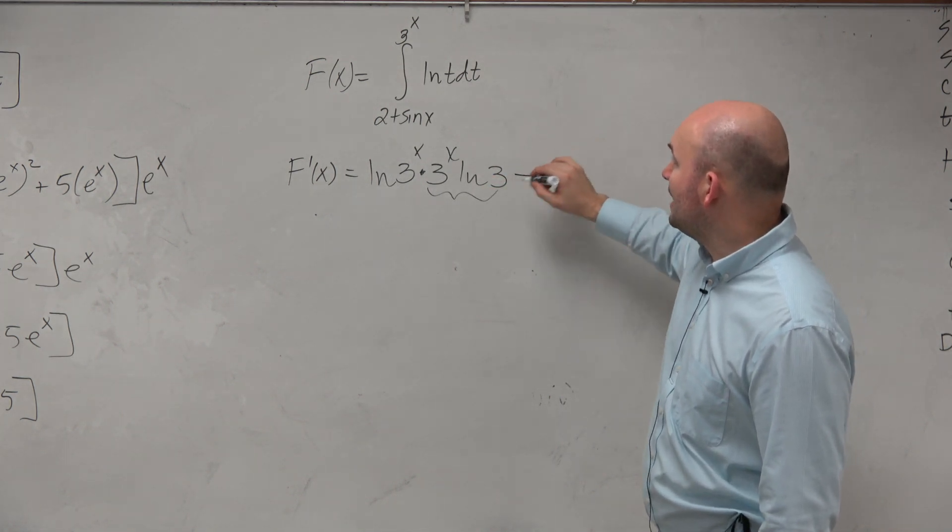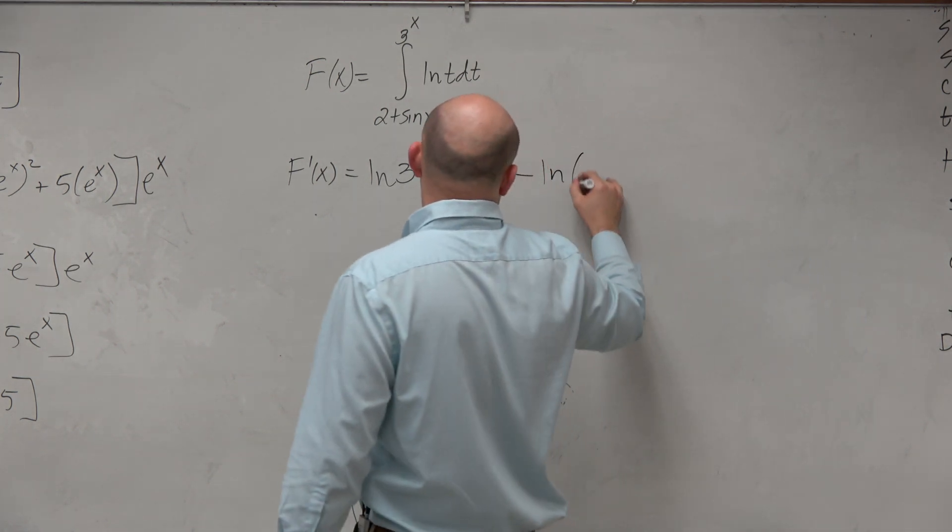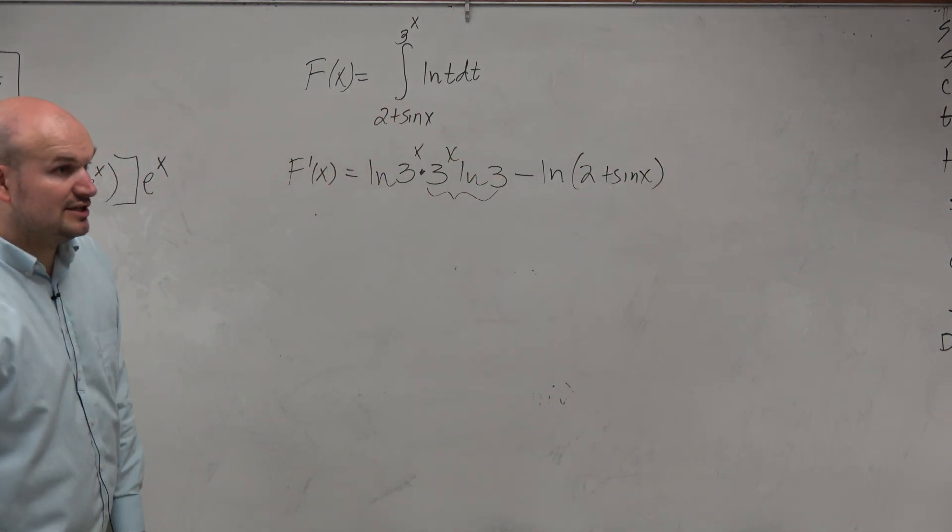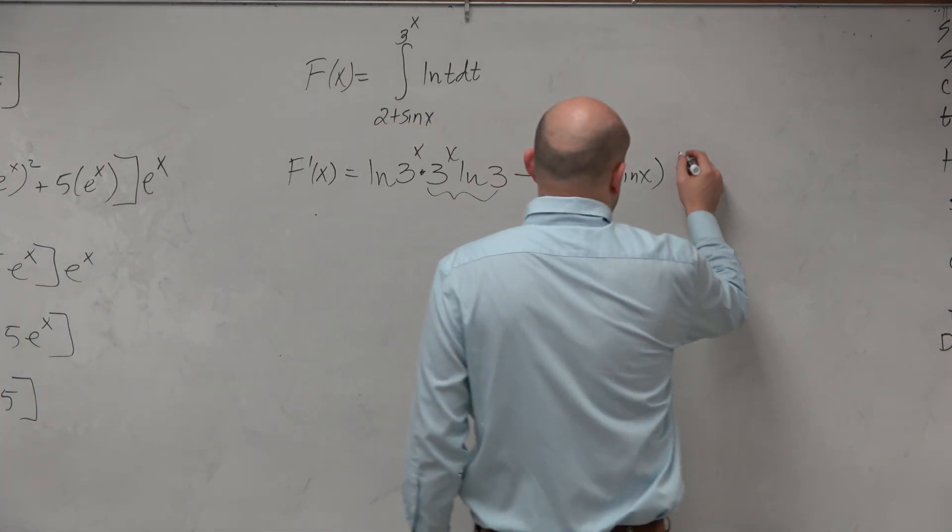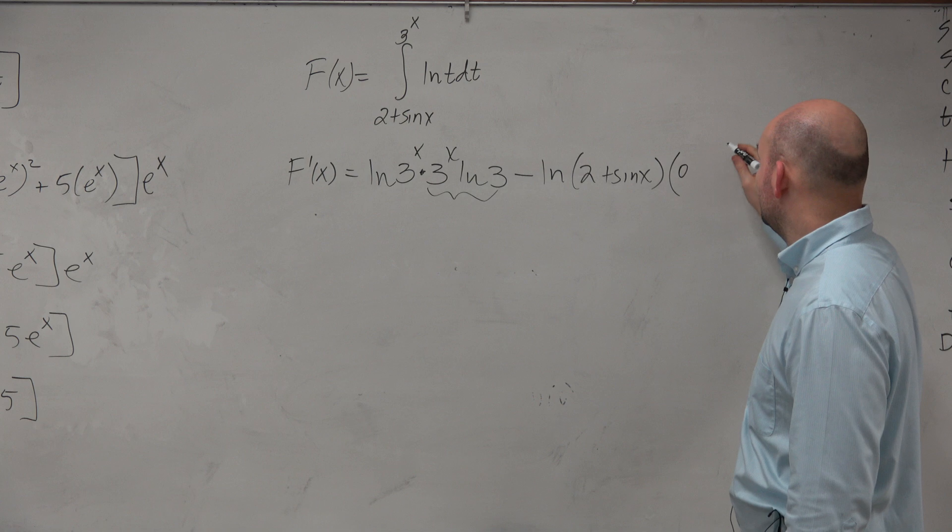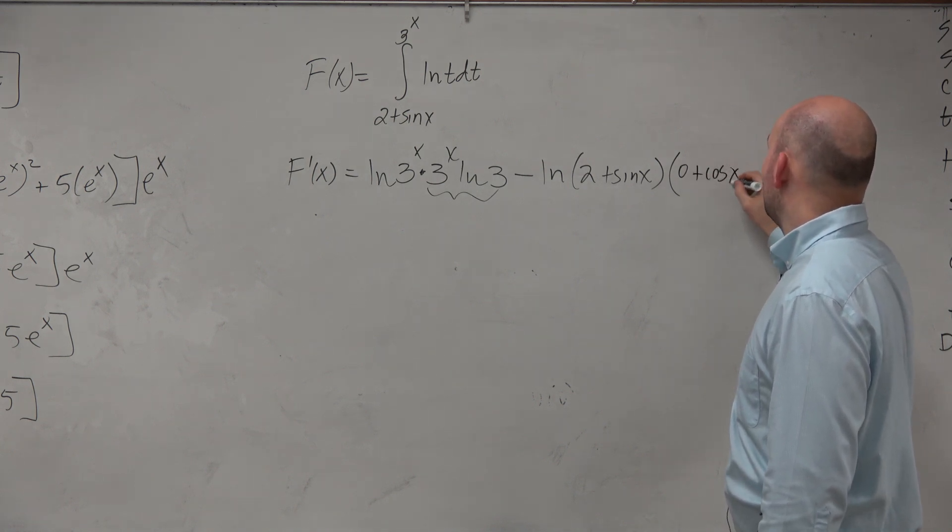And then minus ln of 2 plus sine of x. And now we've got to take the derivative times the derivative. Well, derivative of 2 is 0. Derivative of sine is cosine of x.